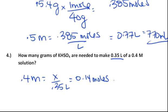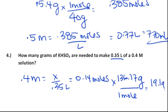which you multiply by the molecular weight of potassium hydrogen sulfate, which you can find by summing up the weights of the atoms as given in the periodic table, and that gives you 19.1 grams.